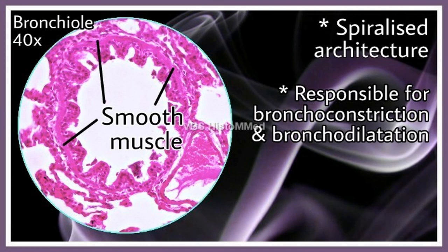The smooth muscle present in the bronchiole is a very signature feature. It appears circular in this photograph, but the point is this is a spiralized architecture — one or two layers of muscle running in spirals, with another group of smooth muscles running in the opposite spiral direction. So there are two spirals contrasting each other in direction, and this spiral architecture is responsible for bronchoconstriction and bronchodilatation.